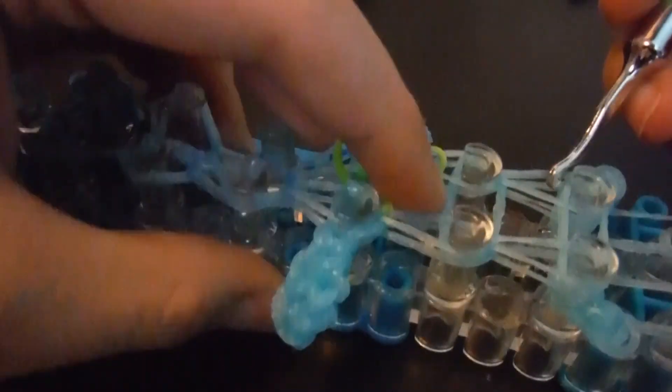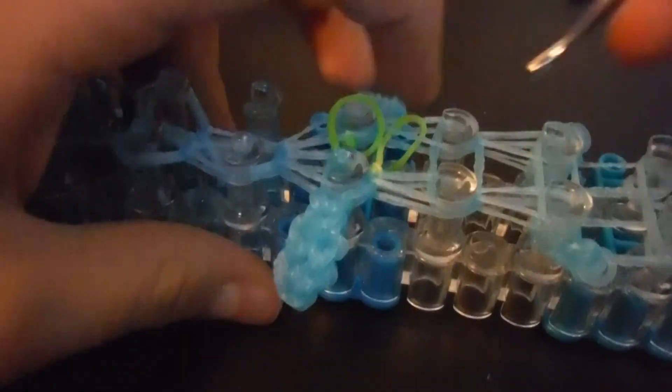If you wanted to do spikes, you just make the spike and then you put it on the horizontal band and then put the horizontal band on. But I do not want to do spikes.